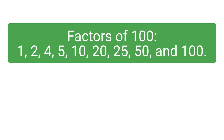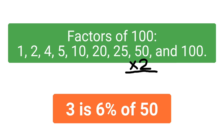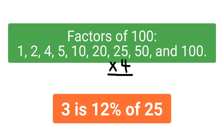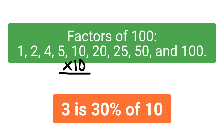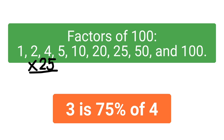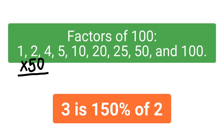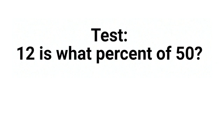This trick works when you're finding the percent of a number that's a factor of 100, like any of these numbers. For example: 3 is 3 percent of 100; 3 is 6 percent of 50; 3 is 12 percent of 25; 3 is 15 percent of 20; 3 is 30 percent of 10; 3 is 60 percent of 5; 3 is 75 percent of 4; 3 is 150 percent of 2; and 3 is 300 percent of 1.